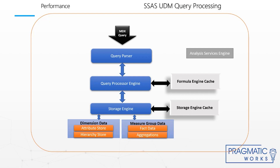To determine this, you can use SQL Profiler to perform an OLAP trace and capture certain events which will tell you the time taken by these components. To summarize: the formula engine works out what data is needed for each query and requests it from the storage engine. The storage engine handles retrieval of raw data from disk and any inner aggregations that are required. Aggregations are only useful when the storage engine has to fetch the data from disk, and will not be used if the data is already in the storage engine cache. Aggregations may not be useful if the cause of the query performance problems lies in the formula engine.